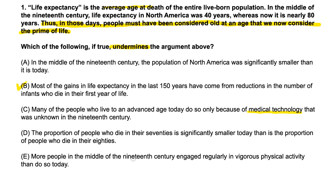E says: more people in the middle of the 19th century engaged regularly in vigorous physical activity than do so today. E is very similar to C in that it gives a reason — vigorous physical activity — to explain why the average age of death is now older. So both C and E don't undermine the argument; they actually sort of support it. C, D, and E are all out, and B is the answer that would most undermine the argument. So B is the answer.